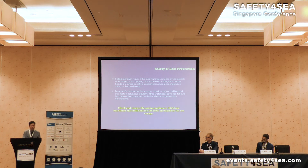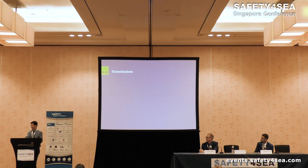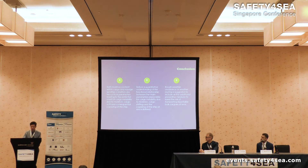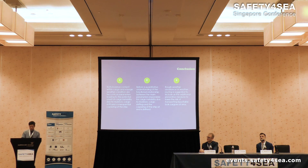We must also make sure that life-saving appliances are functional and donned when needed. In conclusion, cargo instability is a two-parameter problem: first, transportable moisture limits; and second, voyage weather conditions. Before a quantitative understanding of the functional relationship between the main parameters responsible for cargo instability due to moisture, cargo shifting, and capsizing is fully defined, rough weather avoidance and weather routing is suggested to be included as another preventive measure to lower the risk in transporting liquefiable cargo at sea.